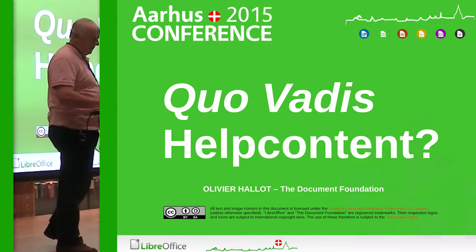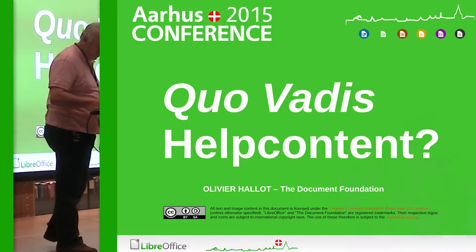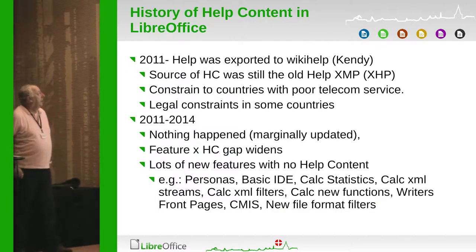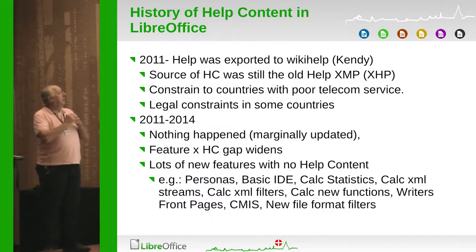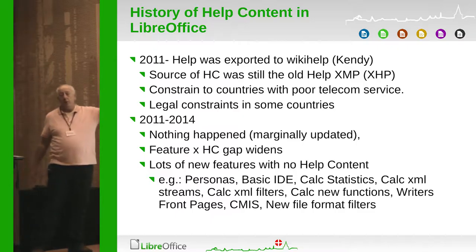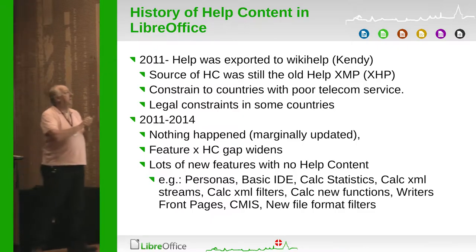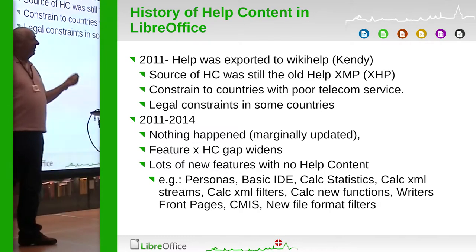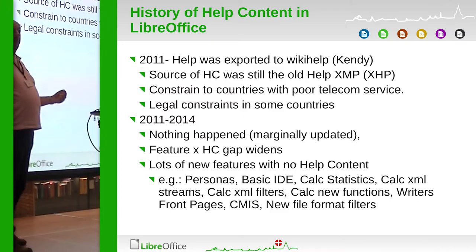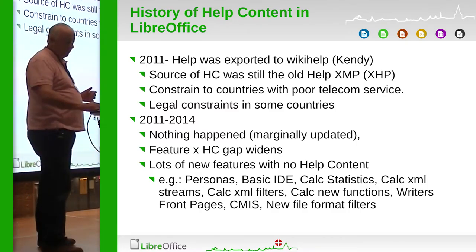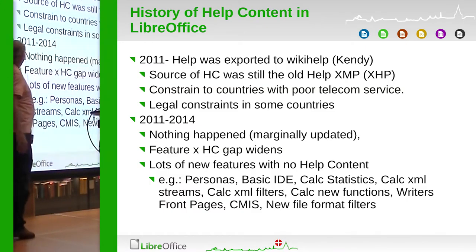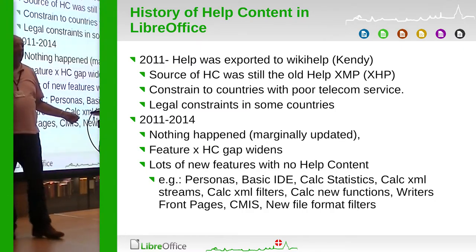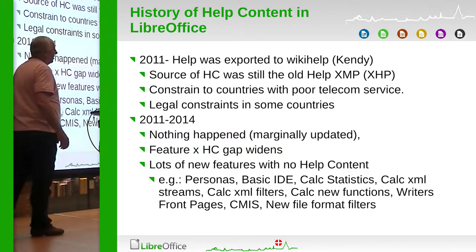The real history of the help content is the following: until 2011, help was exported to wiki help by the work of Candy. The source of the hub content was still in the old help XHP files. There are constraints in some countries that cannot have good telecom service to access wiki help, and there are some legal concerns that you need to have the help with the product.